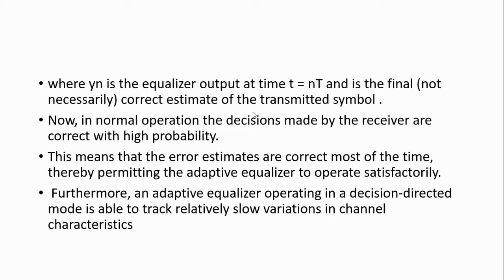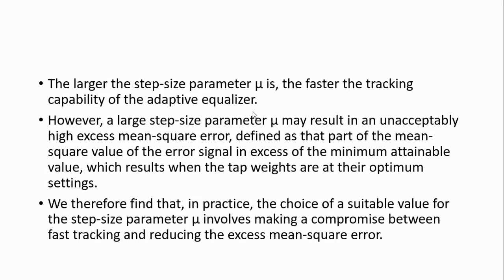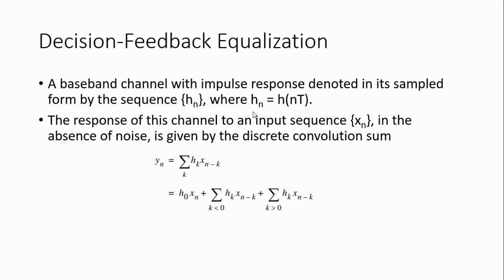Therefore, the adaptive equalizer operating in decision-directed mode is able to track relatively slow variations in signal channel characteristics. A large step size produces faster tracking, but it creates excess mean square error. To minimize the excess mean square error, we need to choose a suitable step size parameter mu that enables faster tracking while also reducing the excess mean square error.